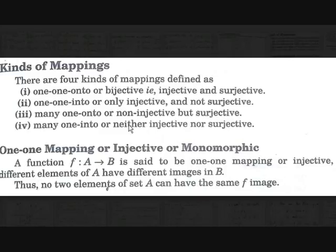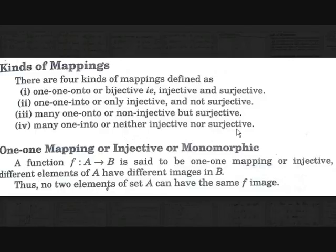Let's see what an injective function, or one-one mapping, or monomorphic mapping is. A function f: A → B is said to be a one-one mapping or injective if different elements of A have different images in B. Thus, no two elements of set A can have the same image — every element of B should be the image of a unique element in set A.